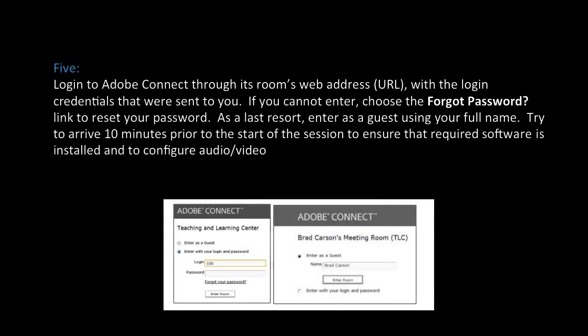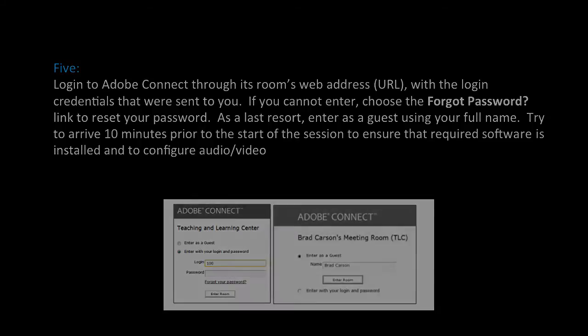Step 5: Log into Adobe Connect through its room's web address with the login credentials that were sent to you. If you cannot enter, choose the Forgot Password link to reset your password. As a last resort, enter as a guest using your full name. Try to arrive 10 minutes prior to the start of the session to ensure that required software is installed and to configure audio and video.